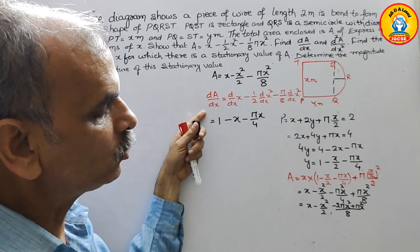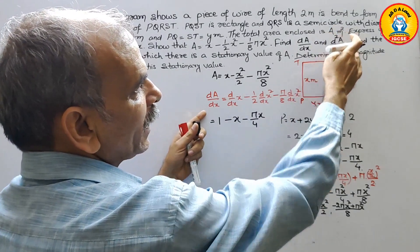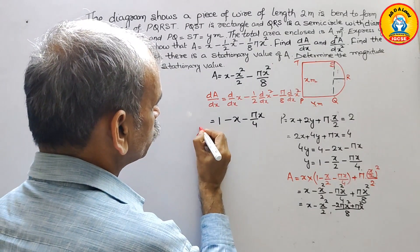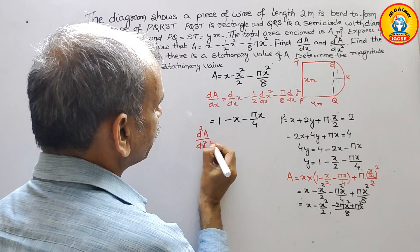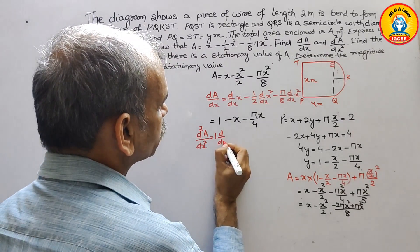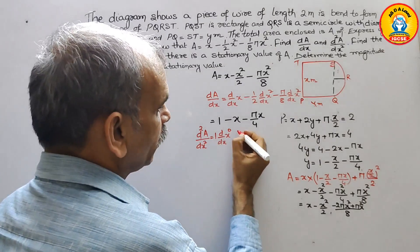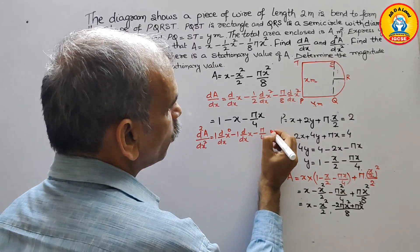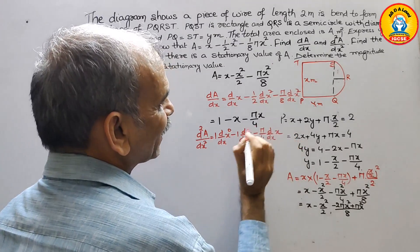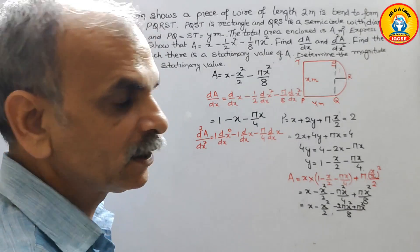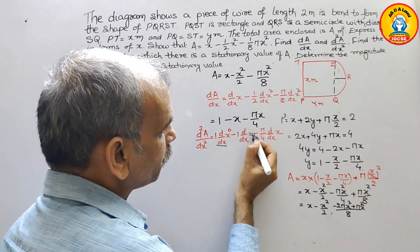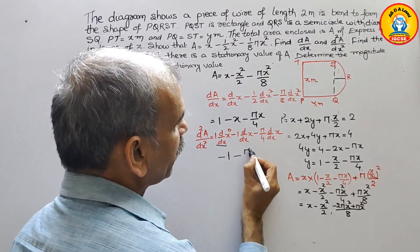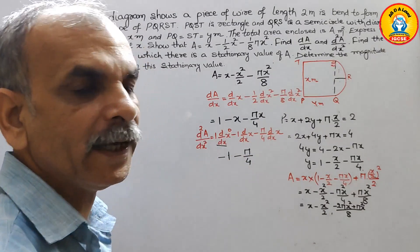Next, find d²A/dx². Differentiating dA/dx again: the derivative of 1 is 0, derivative of X is 1, and derivative of (pi/4)X is pi/4. Therefore d²A/dx² equals minus 1 minus pi/4.